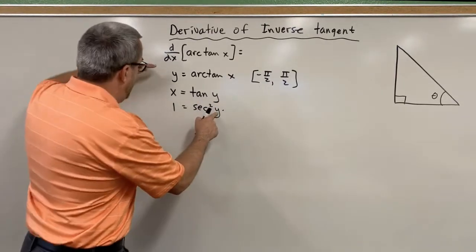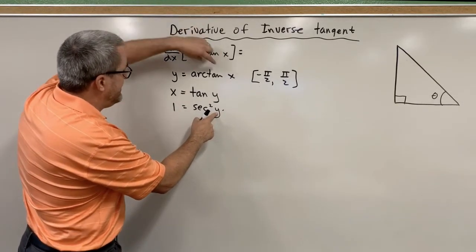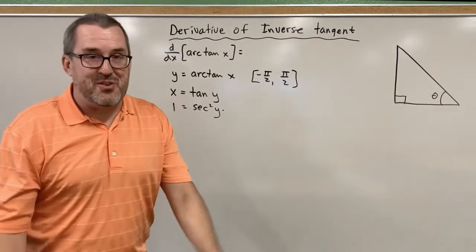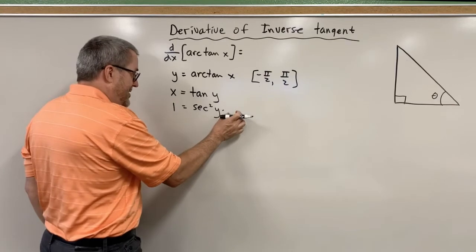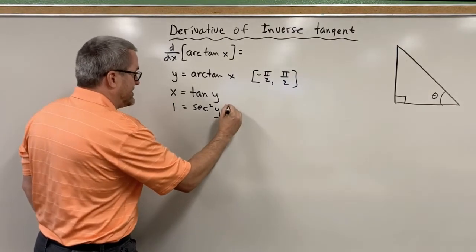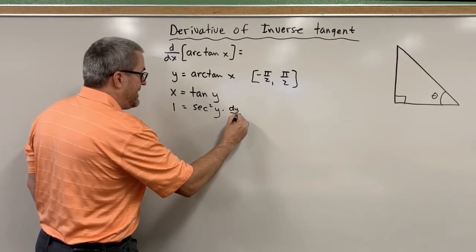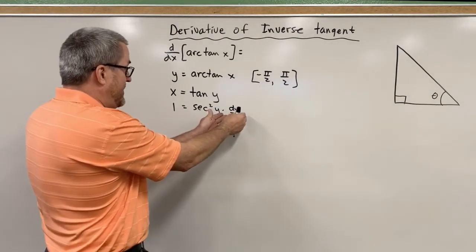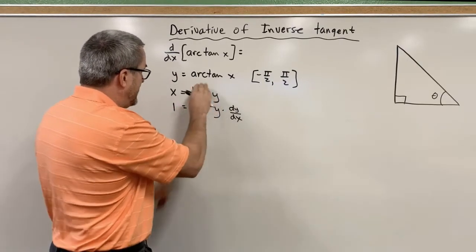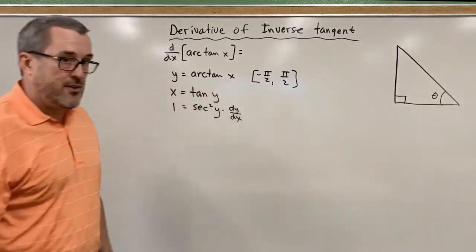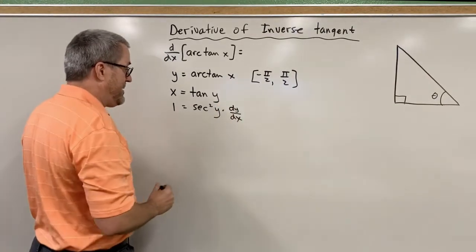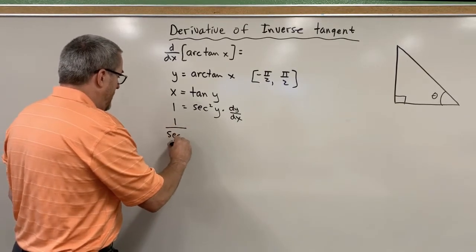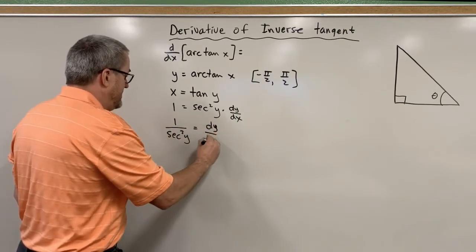The derivative of y — since y is the arc tangent of x and I don't know how to take that derivative yet, that's the whole point of this video — we're just going to write it symbolically as dy/dx. The goal is to figure out what dy/dx is, to find the derivative of arc tangent of x. So let's algebraically manipulate and divide both sides by secant squared of y, giving us 1 over secant squared of y equals dy/dx.